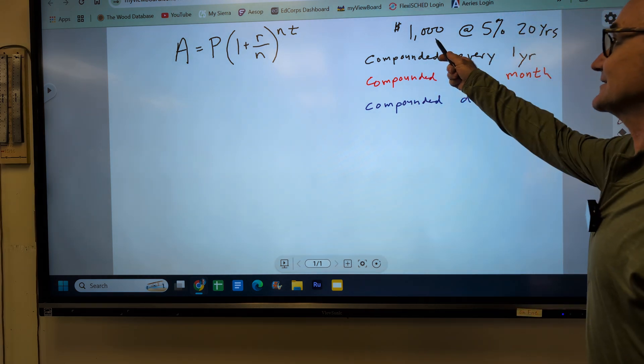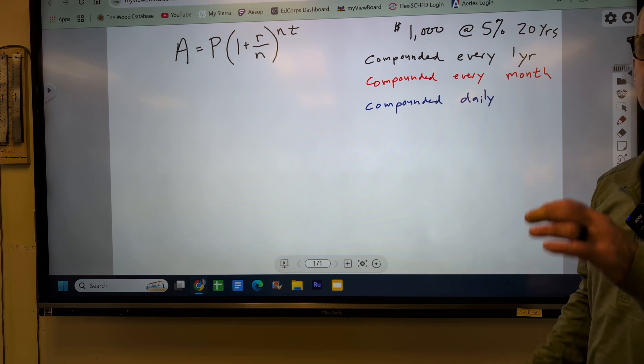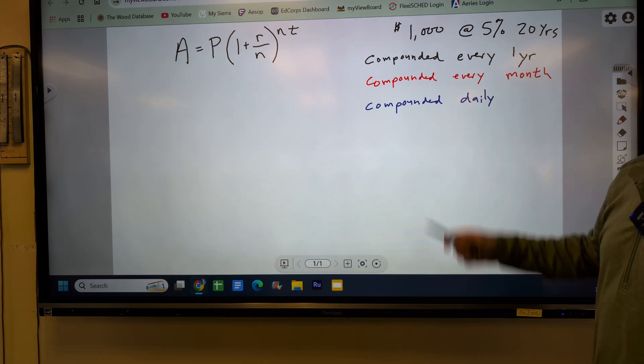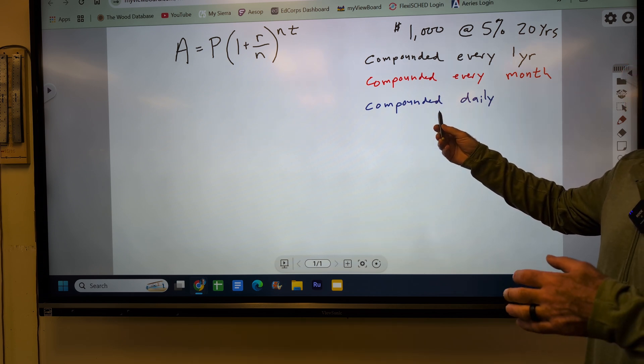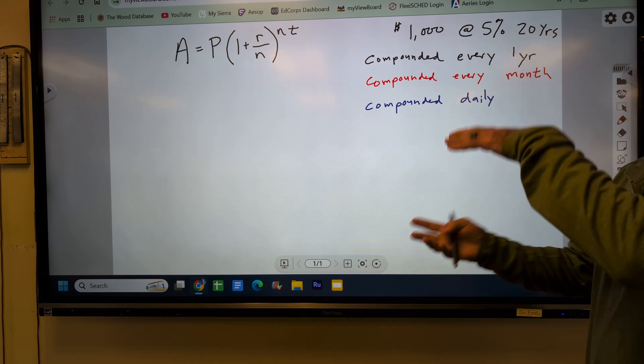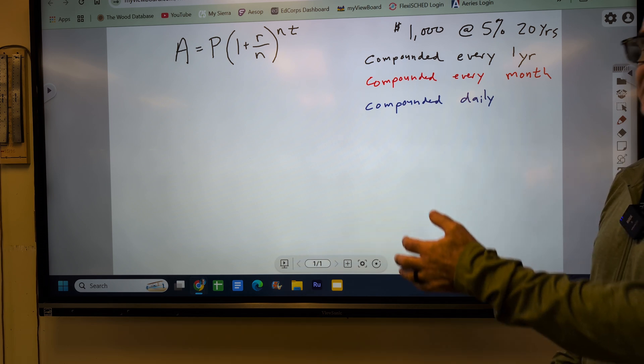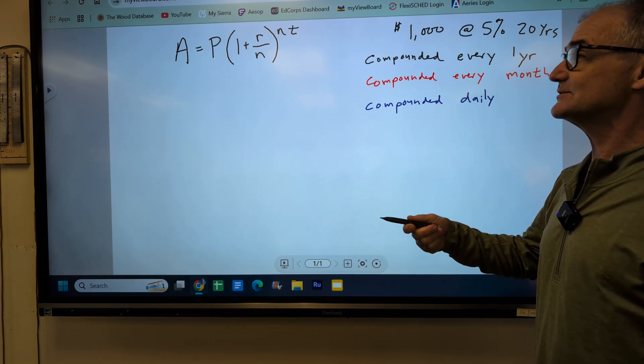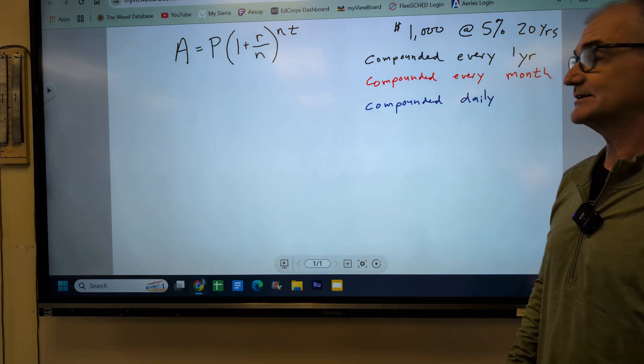So I have an example here: $1,000 at 5% interest for 20 years. And we're going to run it three different ways. If it is compounded every year, if it is compounded every month, and if it is compounded daily. And you'll see as we compound it more and more frequently it grows, but it doesn't grow by that much. You can also compound it continuously, and that's where that PERT equation comes from. But that will be another video.